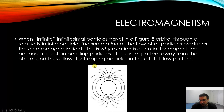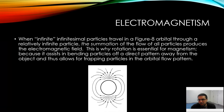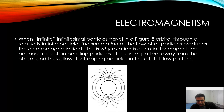When infinitesimal particles travel in this figure-eight pattern, all having slightly varied masses — all of which we cannot observe the difference of because they are so infinitesimal — the summation of the flow of all particles is what produces the electromagnetic field. This is why rotation is essential for magnetism, because it assists in bending particles off of a direct pattern away from the object, and thus allows for the particles to be pulled by the force of gravity back towards the center of mass; otherwise it would just continue away because the gravity is balanced.